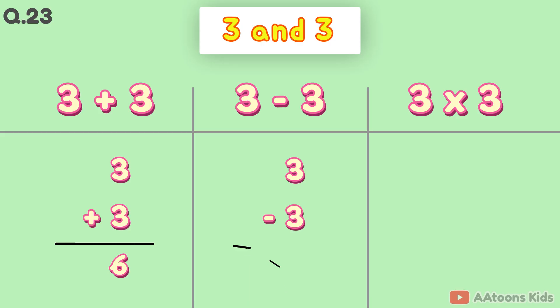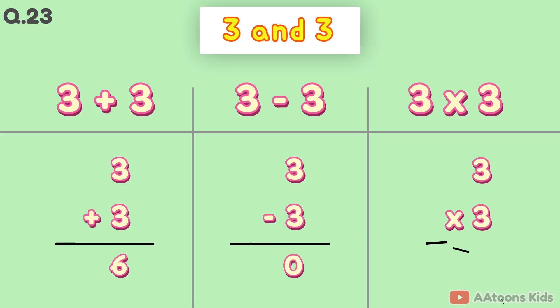3 plus 3 is 6. 3 minus 3 is 0. 3 times 3 is 9.